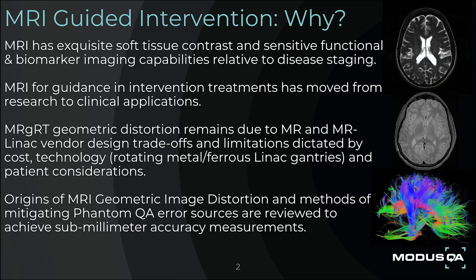Why is there such interest in MRI-guided intervention? MRI has exquisite soft tissue contrast and sensitive functional and biomarker imaging capabilities relative to staging disease. MRI for guidance in intervention treatments has moved from research to clinical applications. MRGRT geometric distortion remains due to MR and MR-Linac vendor design tradeoffs and limitations dictated by cost, technology, and patient considerations.